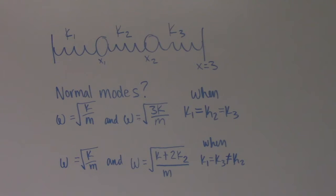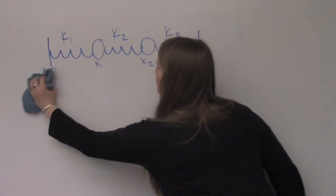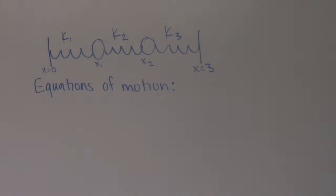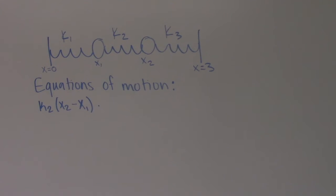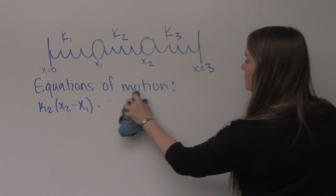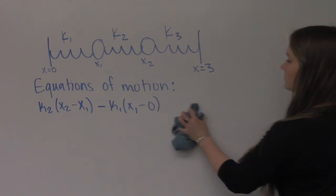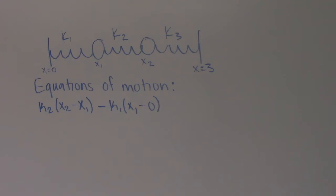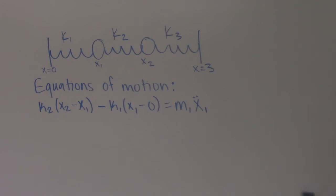The normal modes of this case are very well known and can be found anywhere online. Now, let's look at the equations of motion for this system. Our first equation of motion starts with k2 times the position of mass 2 minus the position of mass 1. Our second term is negative since it's a force in the opposite direction. k1 times the position of the first mass minus 0 since the wall on the left is not moving. This is set equal to the mass of mass 1 times the acceleration of mass 1.